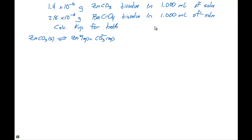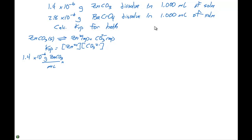The Ksp for this particular expression is going to be the concentration of zinc two plus times the concentration of CO₃ two minus. These concentrations are in units of moles per liter, which we abbreviate as molarity. So we have grams per milliliter, and we need to convert that over to moles per liter. If we have 1.4 times 10 to the minus 6 grams of zinc carbonate per milliliter, we can set up a conversion factor.